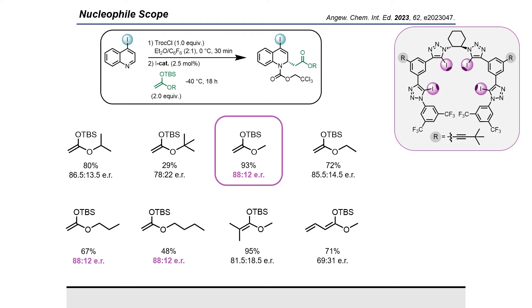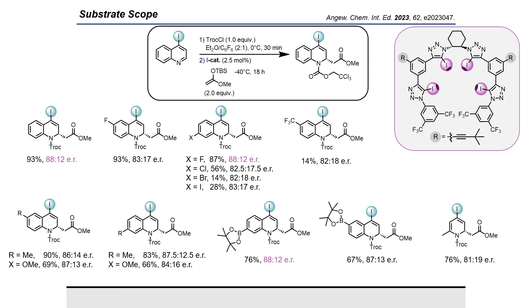We were able to introduce the second halogen atom, electron-withdrawing groups, some electron-neutral and electron-donating groups, boron species, and another class of nitrogen heterocycles — the pyridines. All products gave an enantiomeric ratio in the same high level as the model substrate.